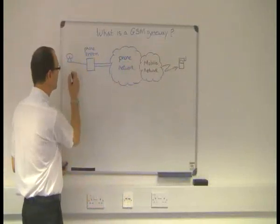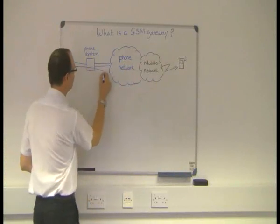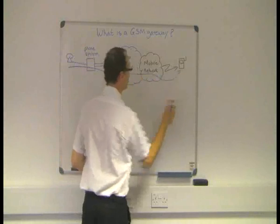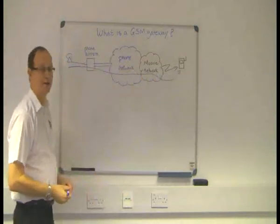So when the call is dialed, the call is routed through the phone system, through the phone network, and away via the mobile network to the mobile handset.